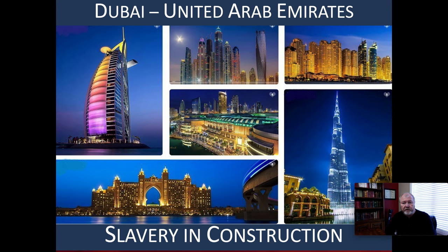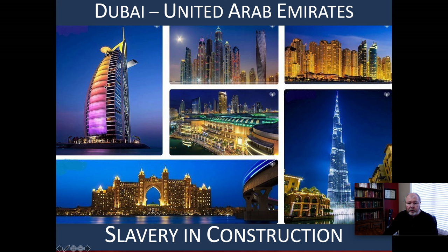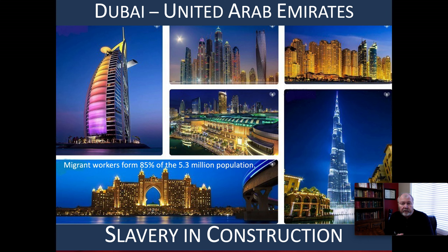What do we see in Dubai? Amazing things: the world's tallest building, the Burj Dubai. The Burj Al Arab, which looks like a giant sail — a luxury hotel with a tennis court and a restaurant on its upper floors. But here's the thing: Dubai, which is one of the seven emirates in the United Arab Emirates, has 85% of its workers as migrant workers — 85% of approximately 5.3 million people.